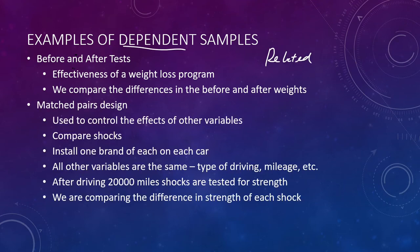We also have matched paired design, and this is used to control the effects of other variables. For example, if I want to compare shocks, I can install one brand of each on each car and use the same type of driving, mileage, etc. After a certain amount of miles — let's say 20,000 miles — we're going to test the shocks for strength and compare the differences in strength of each shock.